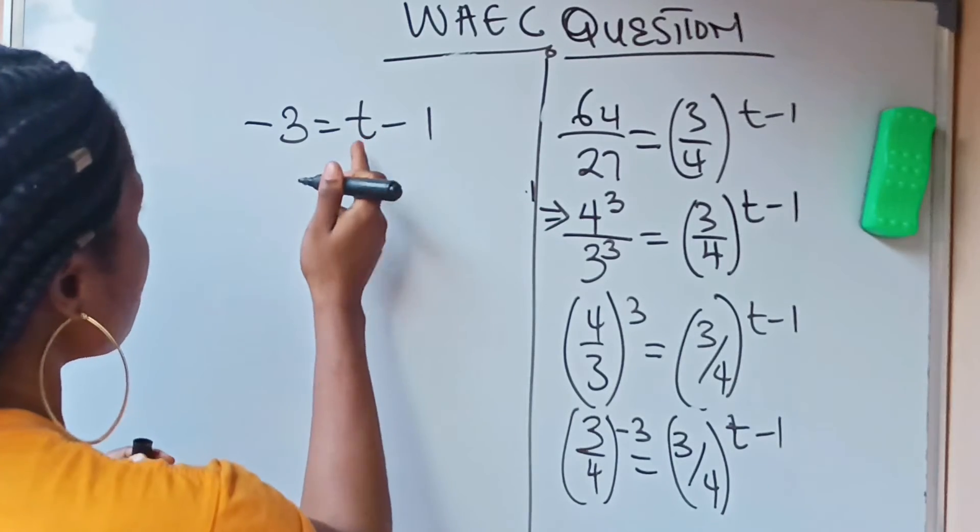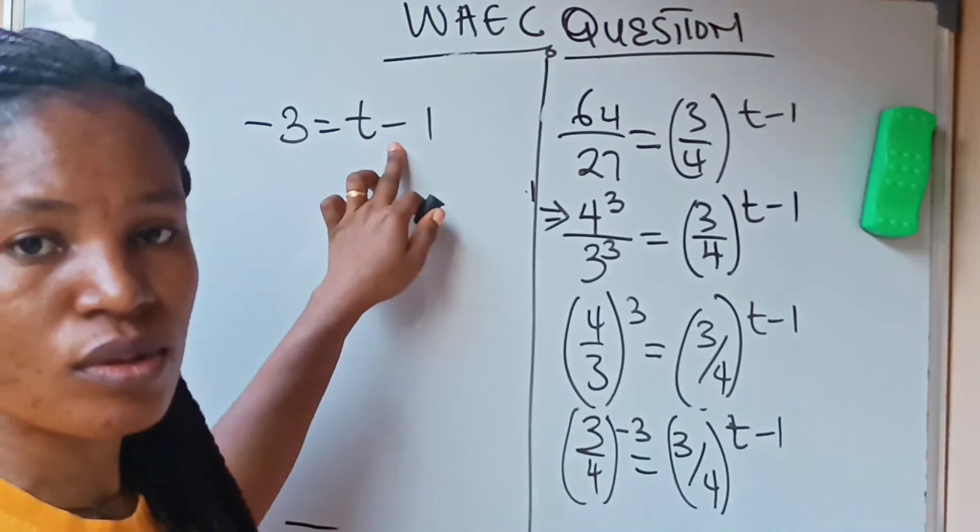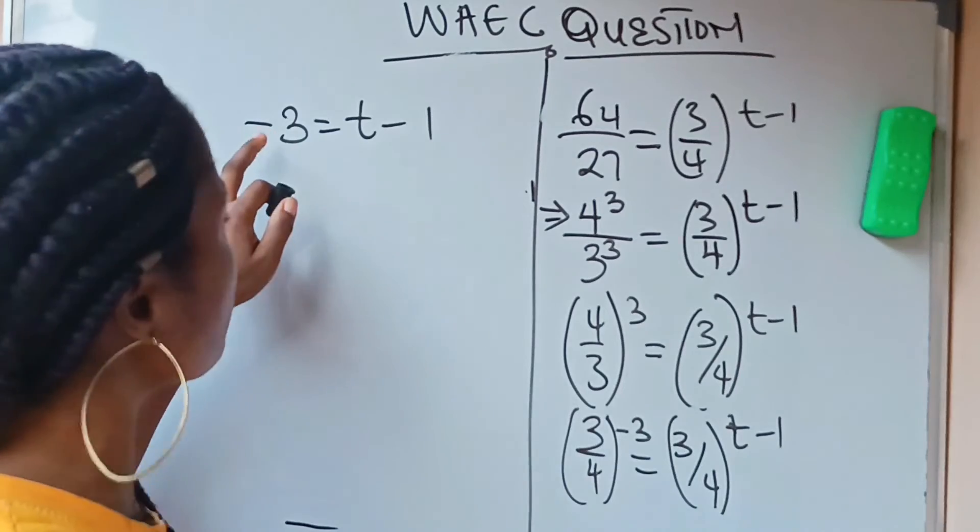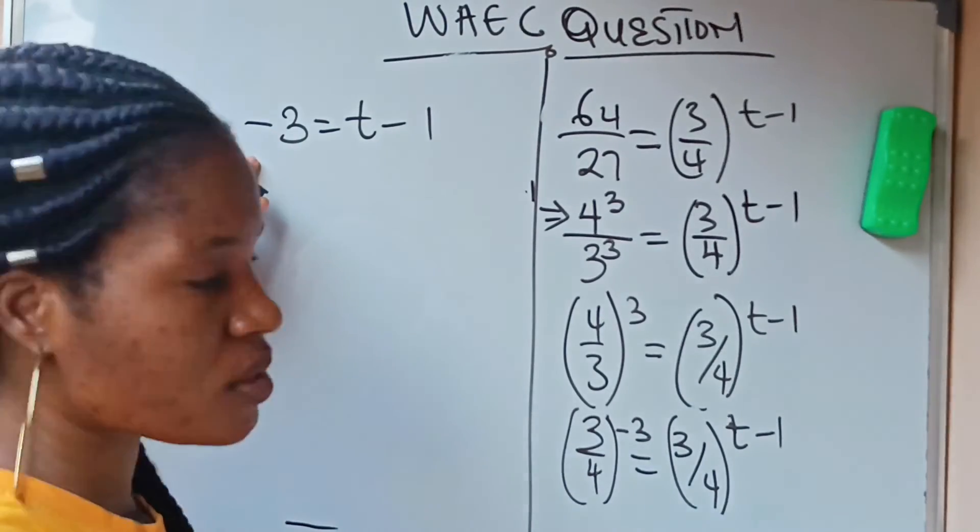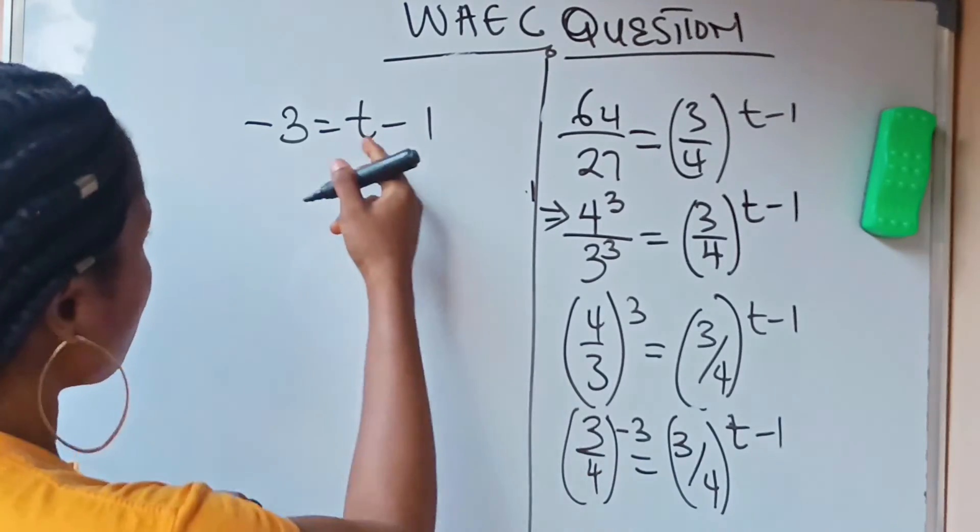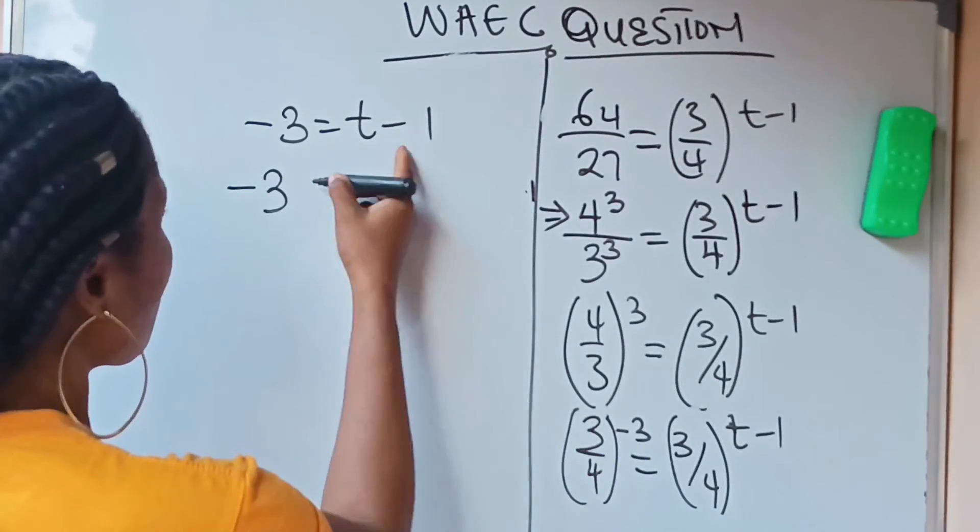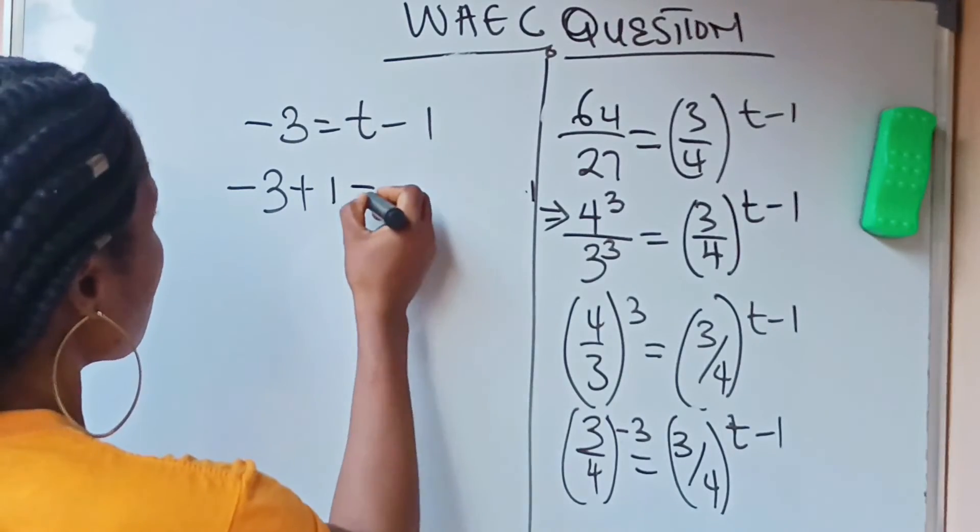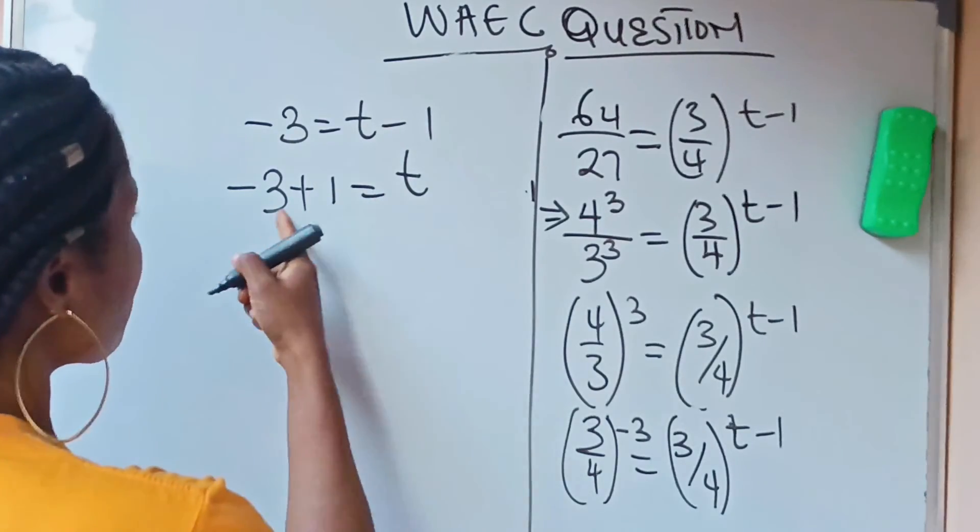Now, how do we get our t? For t to be alone, this minus 1 is going to leave here and cross the equation sign. That means minus 3, and if it does that, this minus sign will change to positive. So you are going to have that minus 3 plus 1 is equal to t.